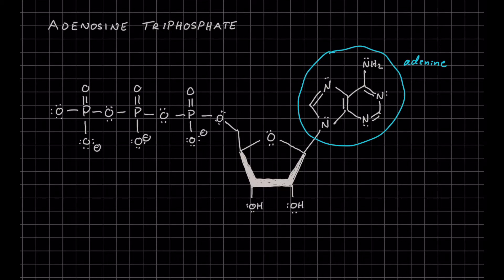The next structure that we're looking at is our ribose ring. This is a five-carbon structure with a one-prime carbon, a two-prime carbon, a three-prime, a four-prime, and a five-prime.